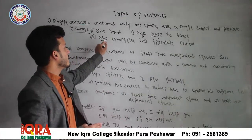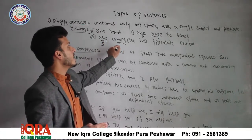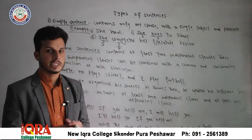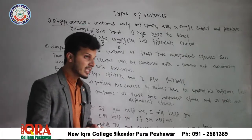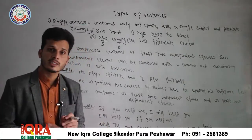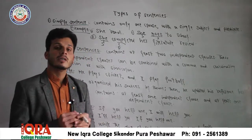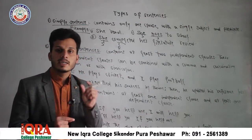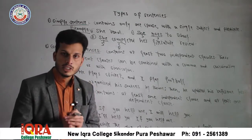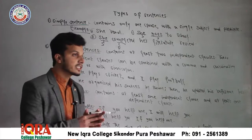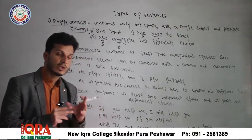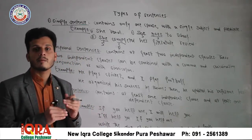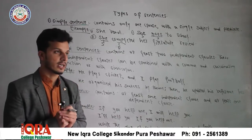Third example: 'She completed her literature review.' She kya hai? Subject hai. Completed kya hai? Verb hai. And literature review kya hai? Object hai. Isi tarah agar hum compound sentence ki baat karein to compound sentence mein yeh hota hai ke is mein do independent clauses hote hain, jo hum coordinating conjunction ke zariye join karte hain. Saath comma bhi hota hai aur semi-colon bhi hota hai.